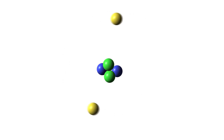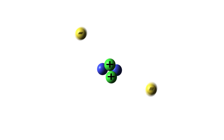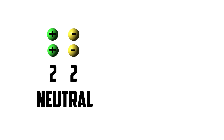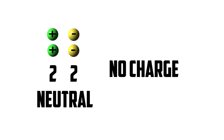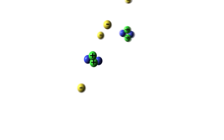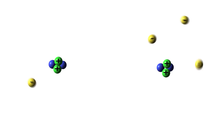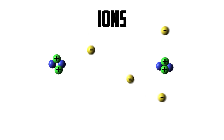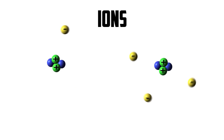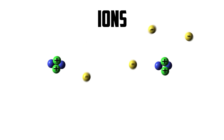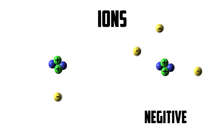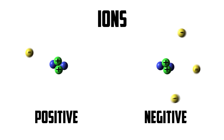In an atom, protons are positively charged, while electrons are equally negatively charged. Atoms normally contain the same number of protons and electrons. These atoms are electrically neutral, having no charge. However, this can be changed. An atom can gain or lose an electron by passing it to or from another atom. This causes the atom to become an ion, meaning that it has extra or is missing electrons. If an ion has extra electrons, it is negatively charged, because the electrons give it more negative charge. An ion with missing electrons is positively charged.